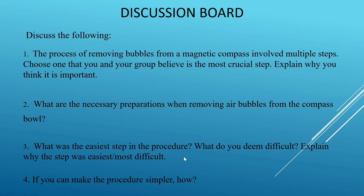Number three: What was the easiest step in the procedure? What do you deem difficult? Explain why the step was easiest or most difficult. For us, the easiest step in the procedure is the opening of the valve, and the most difficult one is filling the magnetic compass fluid using a syringe through the hole and making sure that there are no bubbles.